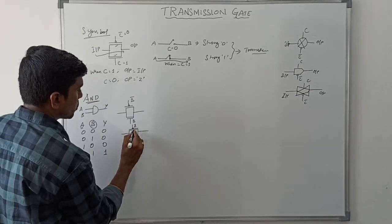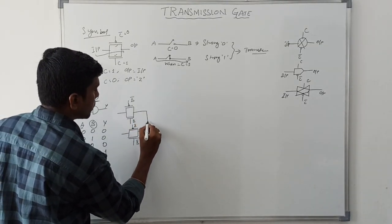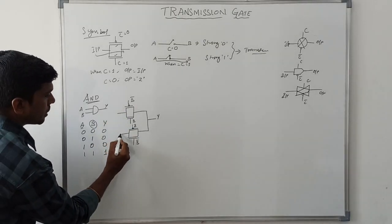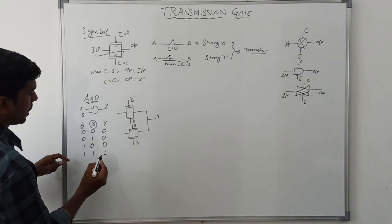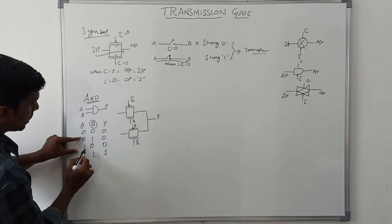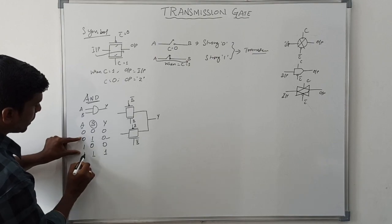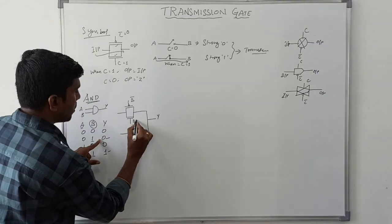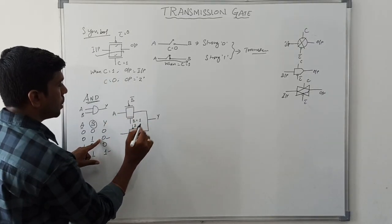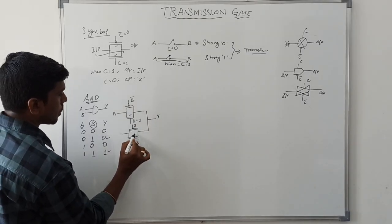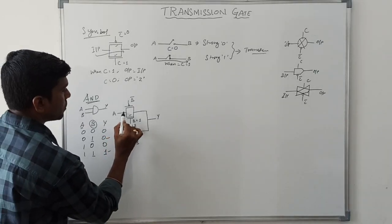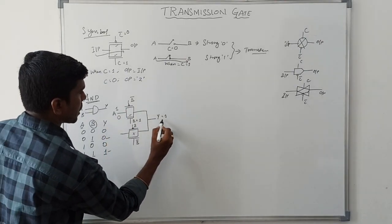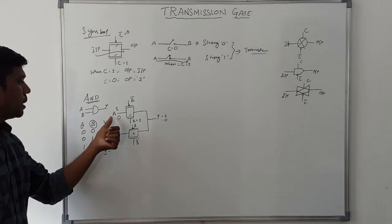The outputs of the two transmission gates are short-circuited to get the final output Y. There is also a pull-up transistor. When B equals 1, this transistor turns on and the A value is transferred to the output side. If A equals 1, this 1 is transferred to output. If A equals 0, this 0 is transferred to output. So when B equals 1, output equals A.